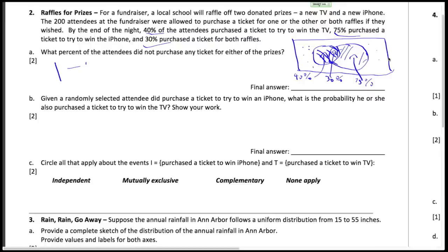Okay, so it's one minus the probability of TV or iPhone, which is 1 minus 0.75 plus 0.4 minus 0.3, and our final answer is 15%. Okay, so the second question asks us: given that somebody did get the iPhone, what's the probability that they also got the TV?